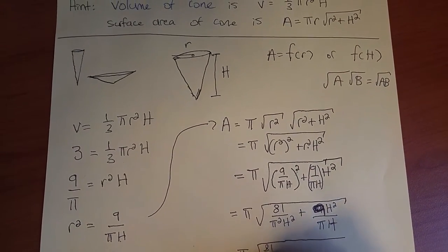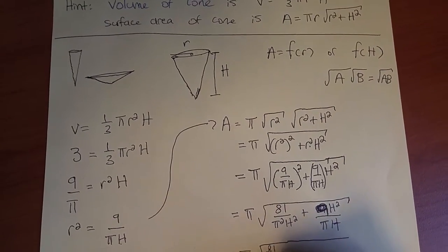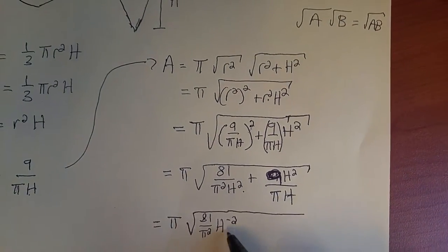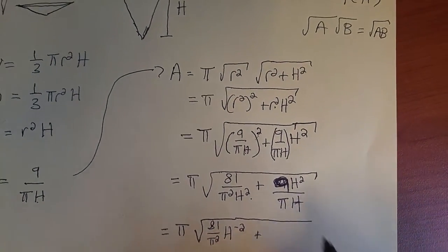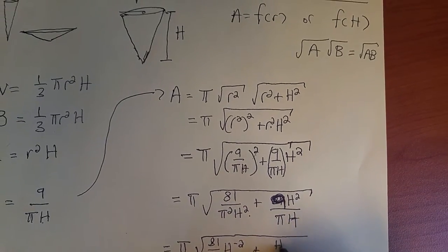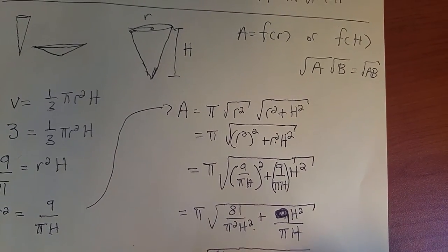We have π√[81/(π²)h⁻² + 9h/π], so that's the first term—writing 1/h² as h⁻²—plus h²/h is h/π, and there's a 9 in front, so 9h/π.